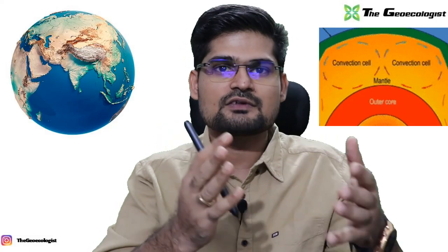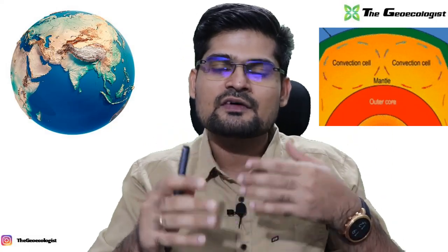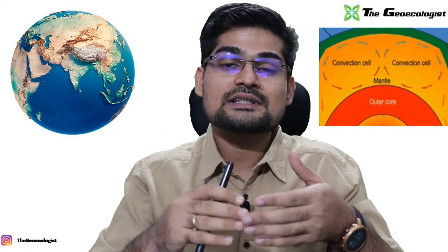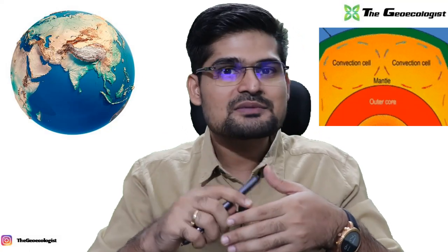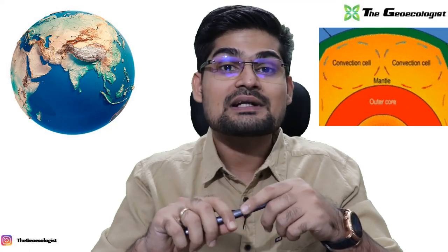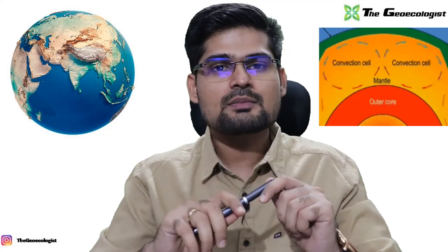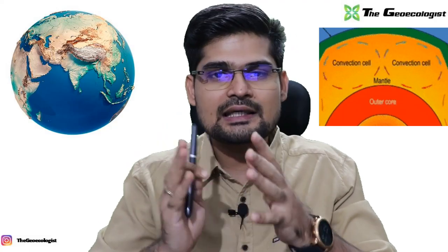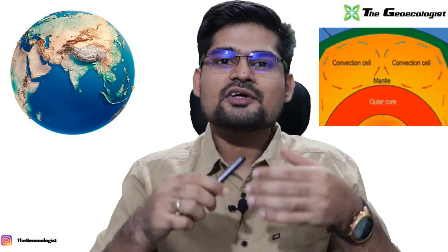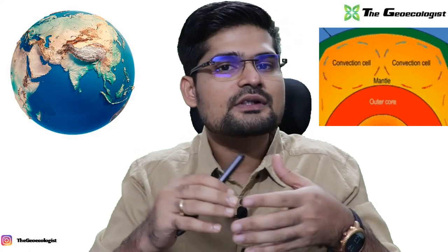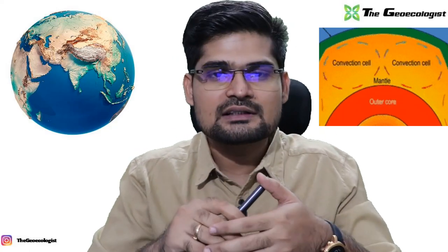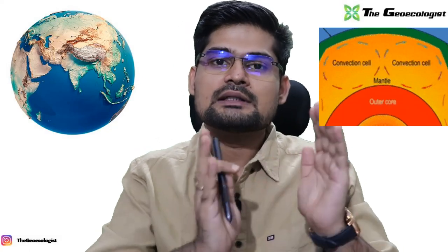Right from the theories of isostasy — from the concept of Airy, Pratt and several others — we also talked about Lothian Green's tetrahedral hypothesis, then Davis's model of cycle of erosion, and importantly Taylor and Wegener's hypothesis of continental drift up till 1915. But before this convectional current theory came into being, other theories were almost criticized for not being aptly relevant for the explanation of the origin of mountains and volcanoes on earth's surface. Convection current theory gave the best scientific understanding, which was different from the previous theories.